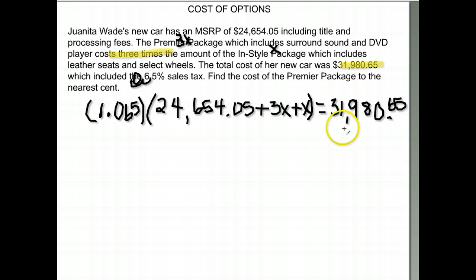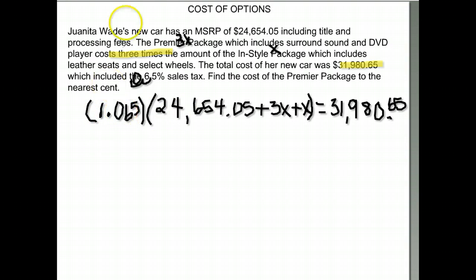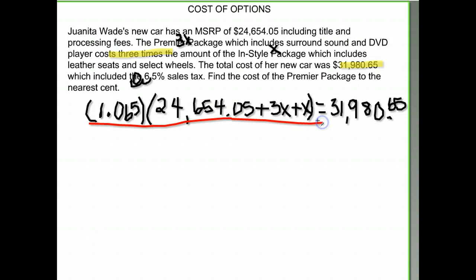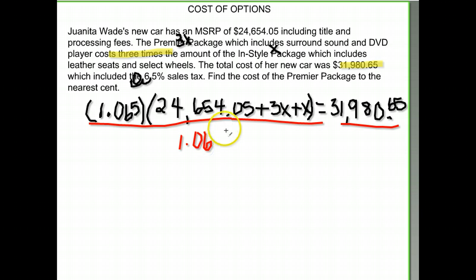We are multiplying all of this by one point zero six five. To find the price without tax, I'm going to divide both sides by one point zero six five. Since that entire expression was multiplied by one point zero six five, dividing by it cancels it on the left side. On the right side I use the calculator to divide.